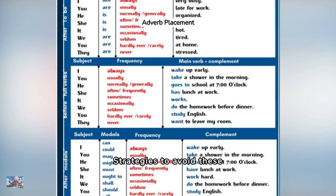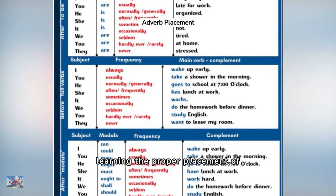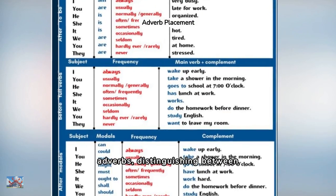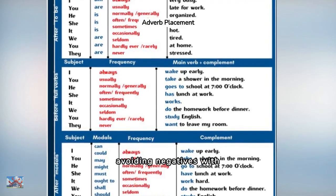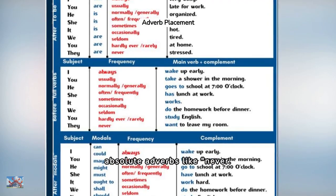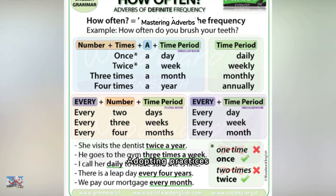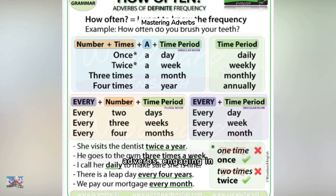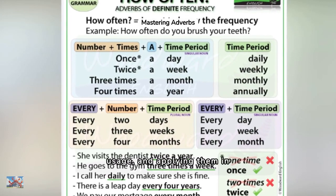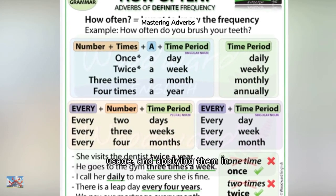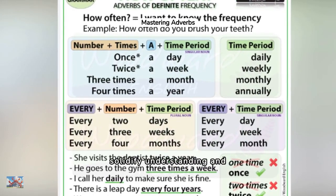Strategies to avoid these common mistakes involve learning the proper placement of adverbs, distinguishing between different types of verbs, and avoiding negatives with absolute adverbs like never. Adopting practices such as studying lists of adverbs, engaging in focused reading to recognize their usage, and applying them in daily conversations can solidify understanding and usage.